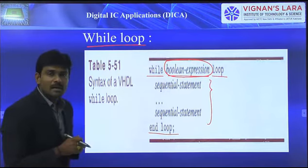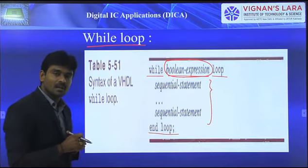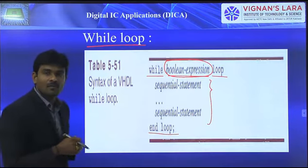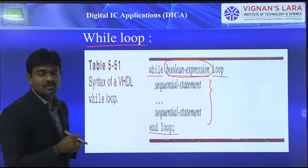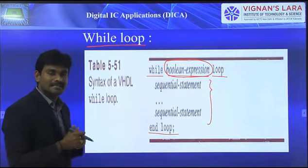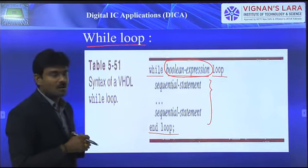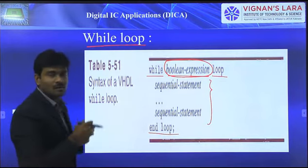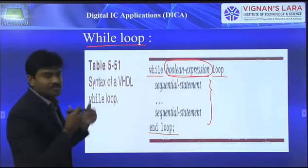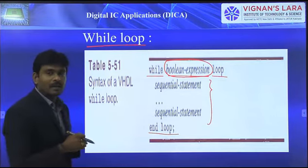Boolean terms are boolean variables or results of comparisons using relational operators such as equals to, not equals to, less than, less than or equals to, greater than, and greater than or equals to. We already discussed this, and I am explaining it once again as context for what we can write in a boolean expression.